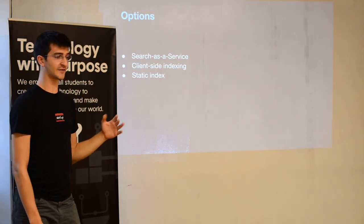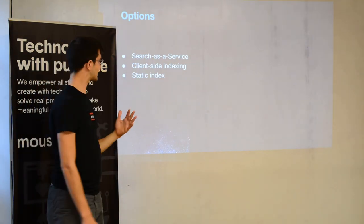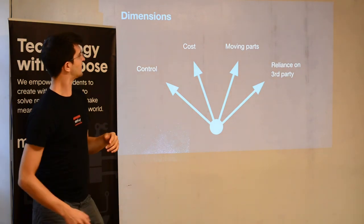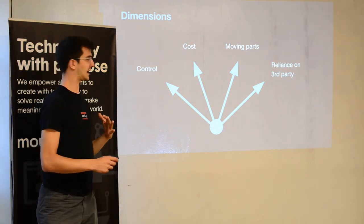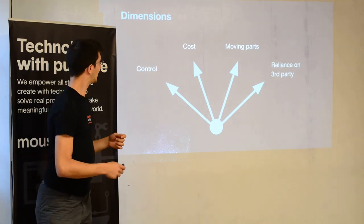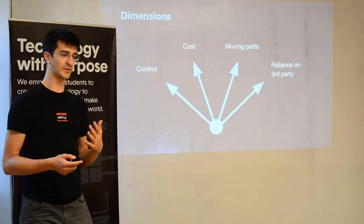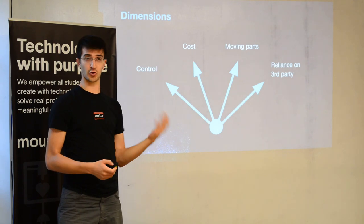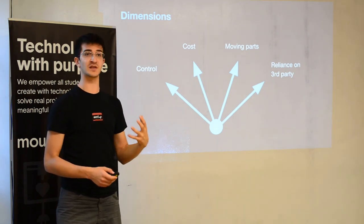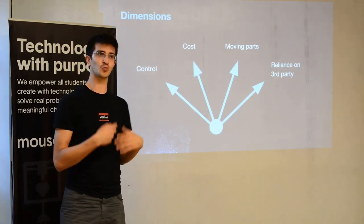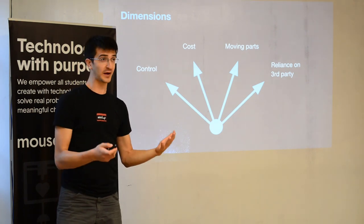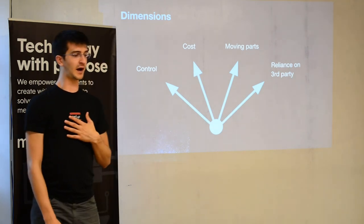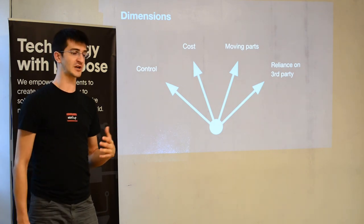When thinking about these different options, there are a handful of dimensions to consider. The first is control. Control can come in a lot of different forms. One is whether your content is publicly accessible — could Google crawl it, for example? Or do you need a special solution that can live within your intranet? When you work in the open, a lot of these tools just work because your content is publicly accessible. It can read from your GitHub repositories. So where the content lives and is accessible is a big consideration.